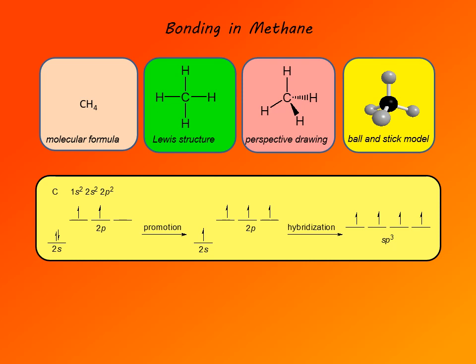Here is a schematic representation of bonding in methane. On the left, we have the carbon atom in the ground state. In the ground state, the electronic configuration of carbon is 1s², 2s², 2p², and the orbital energy diagram of valence electrons shows paired 2s electrons and two unpaired 2p electrons. Promotion results in carbon in an excited state: a 2s electron is promoted to a 2p orbital, giving four unpaired electrons.